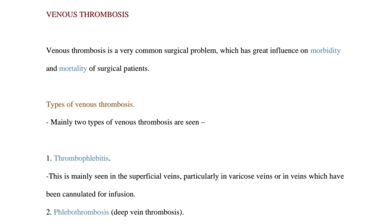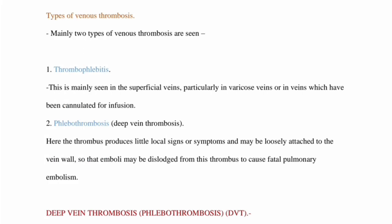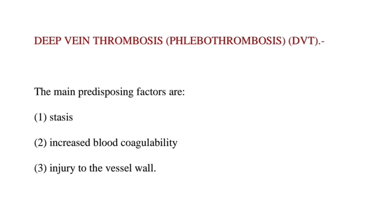The second category is phlebothrombosis — DVT, also known as deep vein thrombosis. Here the thrombus produces little local signs or symptoms and may be loosely attached to the vein wall, so that emboli may be dislodged from this thrombus to cause fatal pulmonary embolism. Now let's talk in detail about deep vein thrombosis, also known as phlebothrombosis.